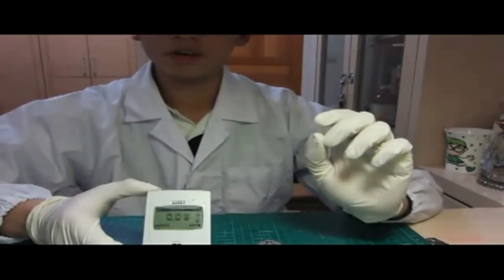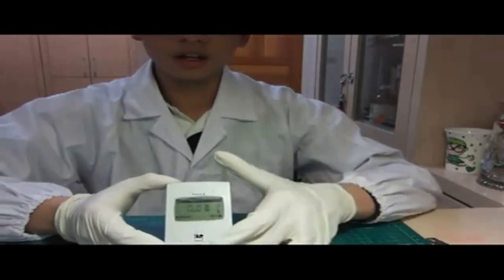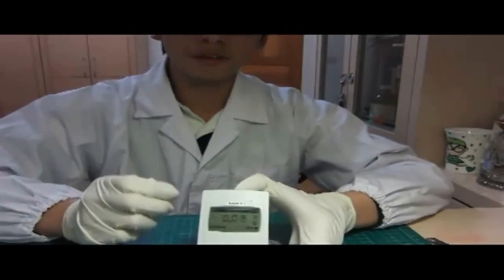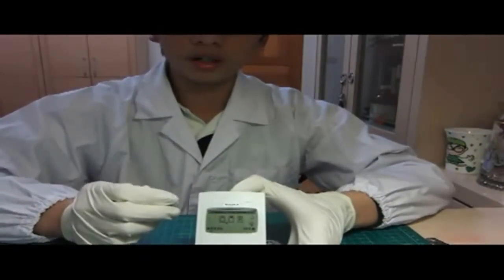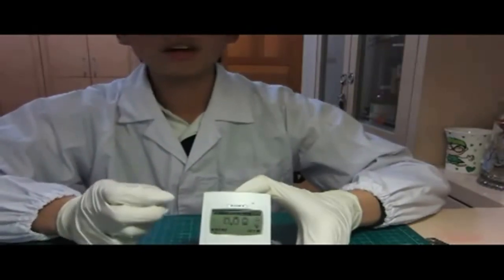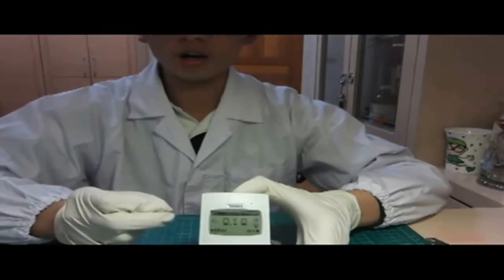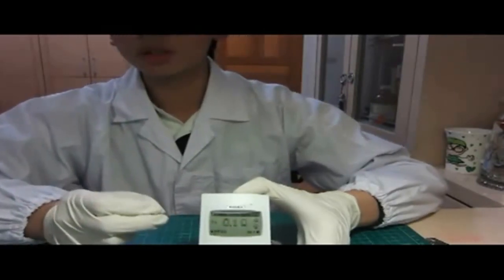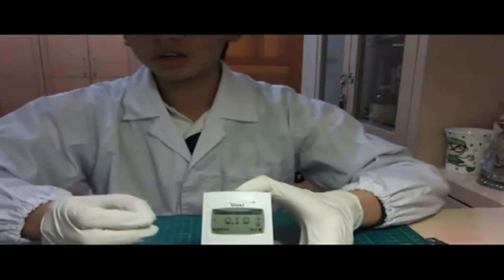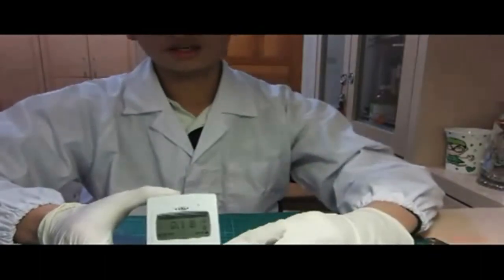It calculates the frequency of beeps and displays the result in microsieverts per hour. The radiation quantity is inversely proportional to the square of the distance between the source and detector. We can use another Geiger counter to prove this.